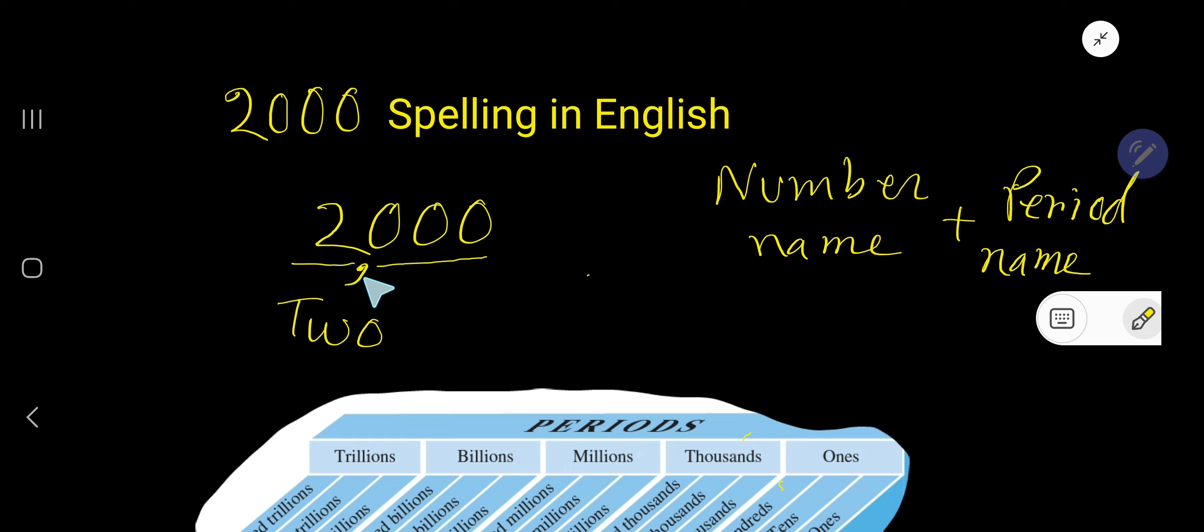Two is in the thousands period, so write here 'thousand' - two thousand. T-H-O-U-S-A-N-D, two thousand. So if you want to spell this number, then you have to spell it this way: two thousand.